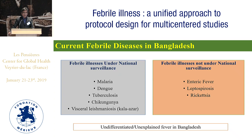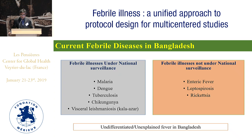The current scenario of febrile illnesses in Bangladesh: febrile illnesses under national surveillance include malaria, dengue, tuberculosis, chikungunya, and visceral leishmaniasis. However, enteric fever, leptospirosis, and rickettsia are not under national surveillance. In addition to these important febrile illnesses, there are a huge number of undifferentiated febrile fever cases in Bangladesh.